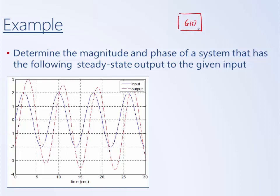We have some system — maybe a motor or a converter — with a signal generator on the input generating a sinusoidal input of some frequency, and some data acquisition on the output, like an oscilloscope. With the red line, you can see there's a little bit of a transient component where it's decaying, but eventually it reaches steady state with a constant sinusoid.